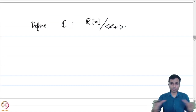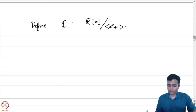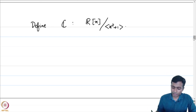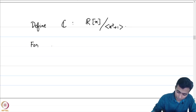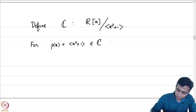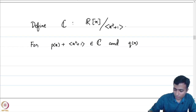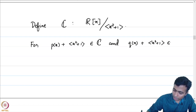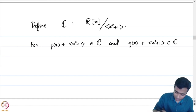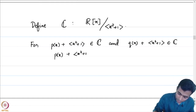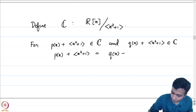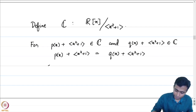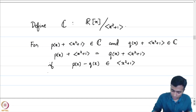Let us define C to be the quotient of R[x] by the ideal generated by x squared plus 1. The objects here will be cosets of the ideal x squared plus 1. Two cosets p(x) + ⟨x²+1⟩ and q(x) + ⟨x²+1⟩ are equal if and only if p(x) minus q(x) belongs to the ideal generated by x squared plus 1, which is equivalent to x squared plus 1 dividing p(x) minus q(x).